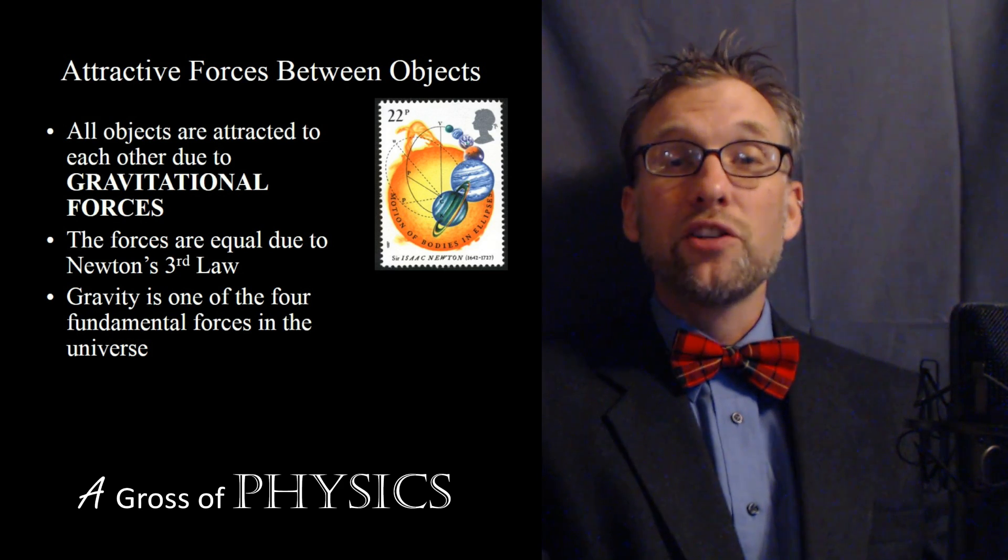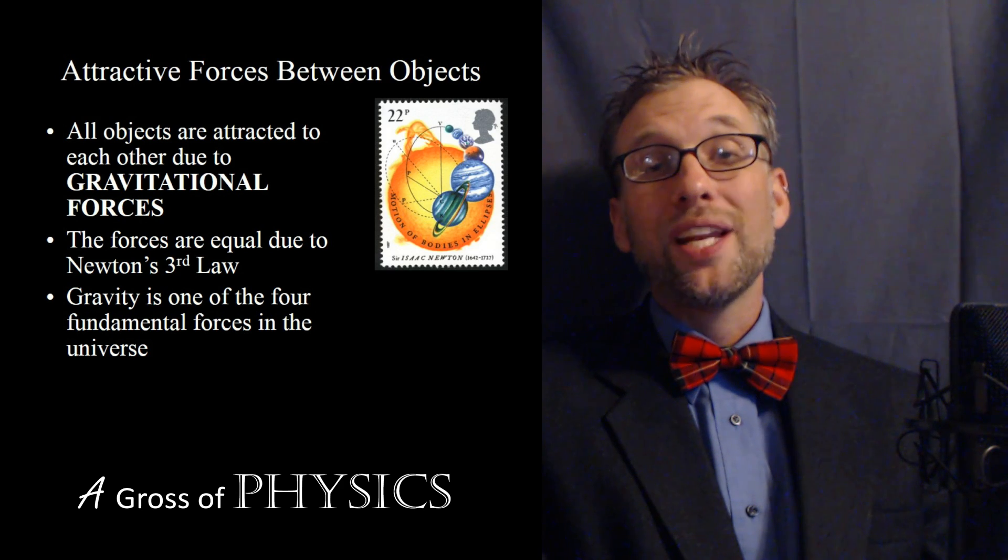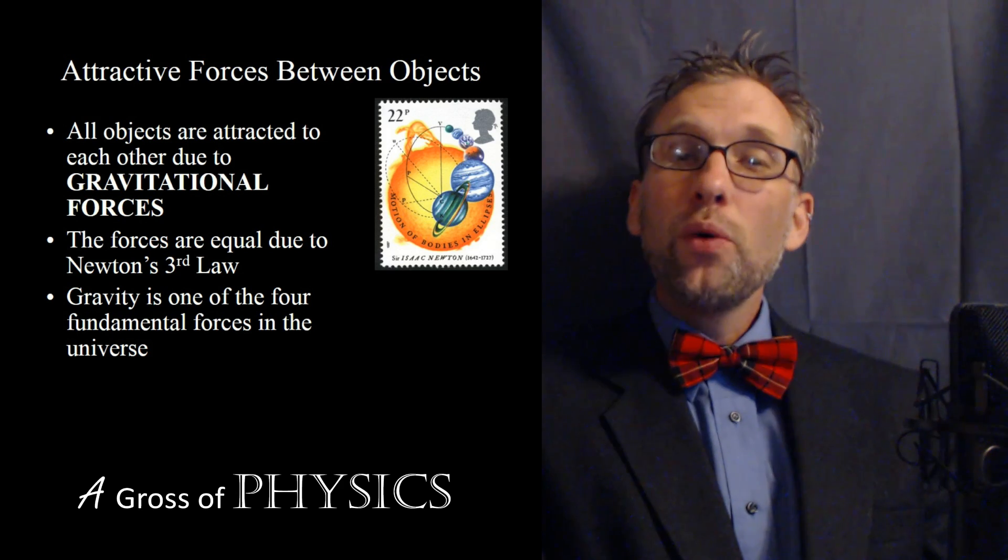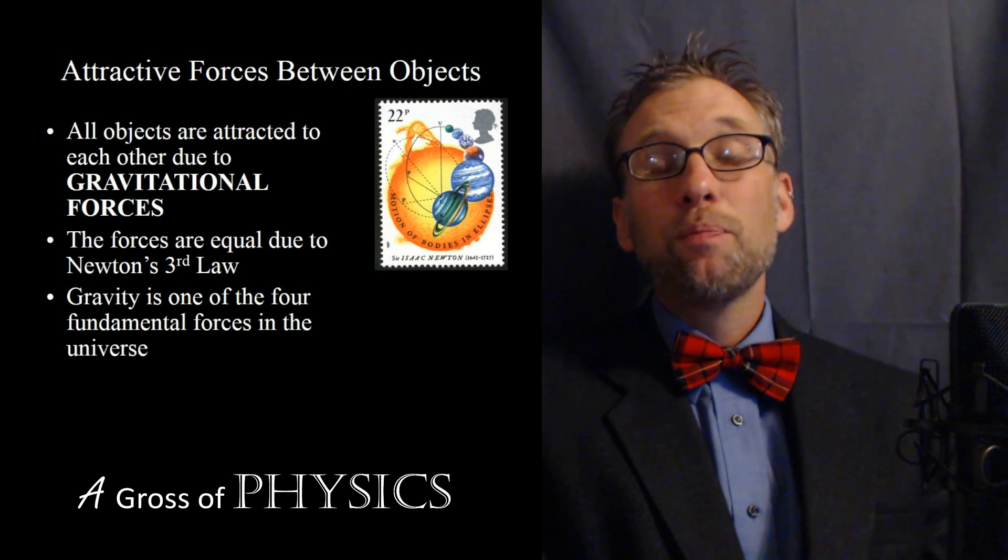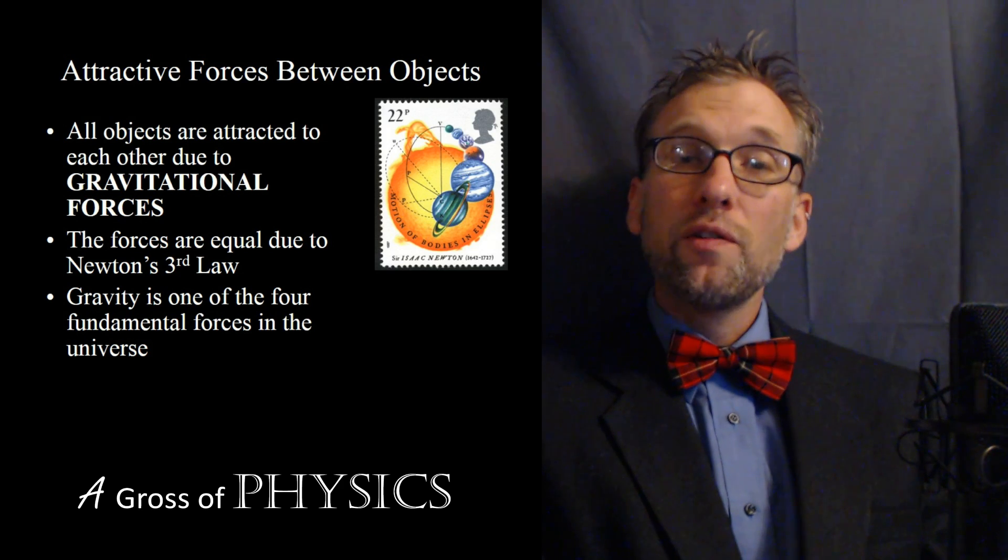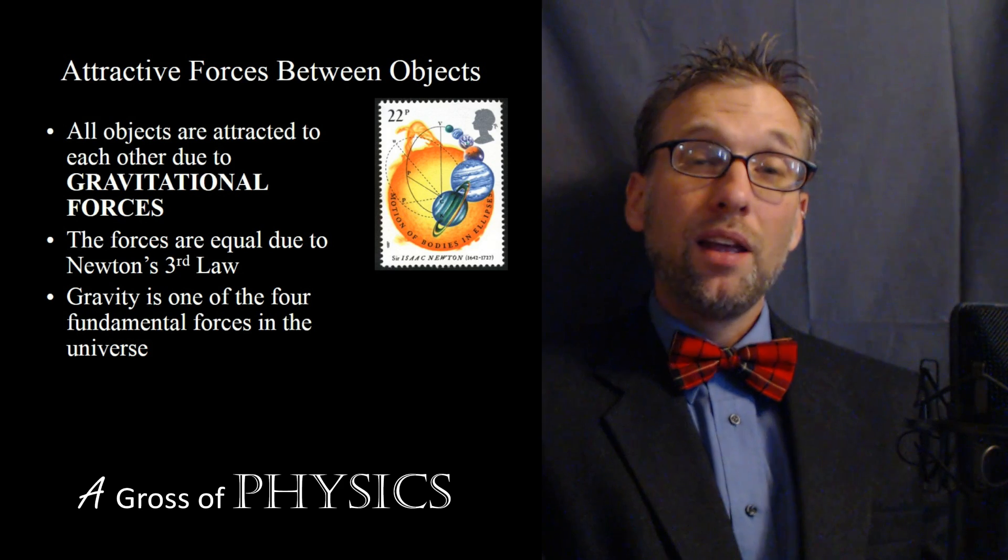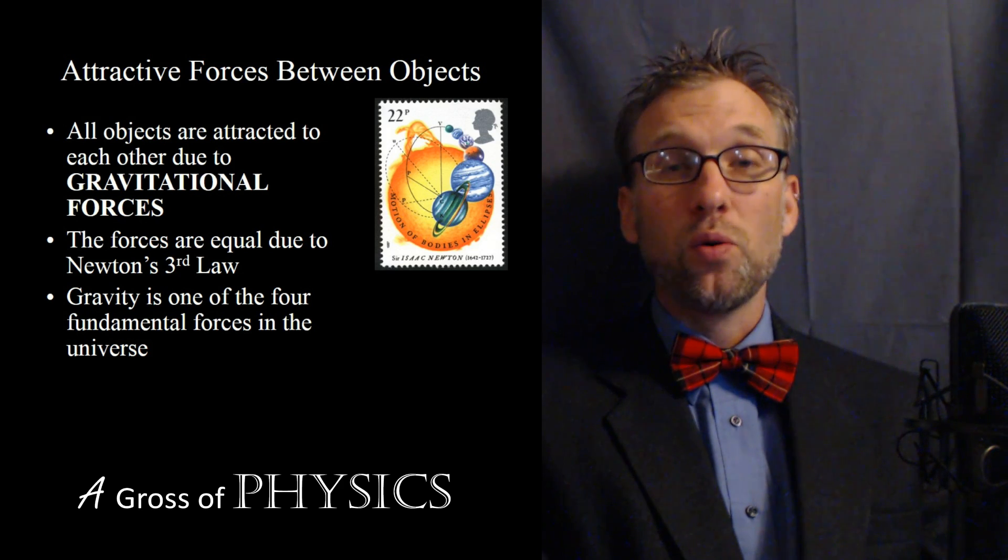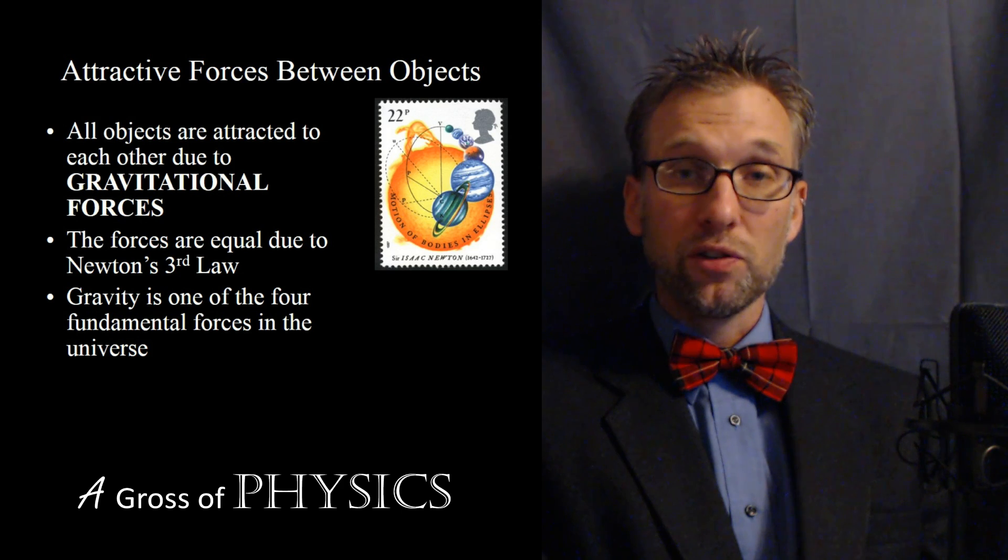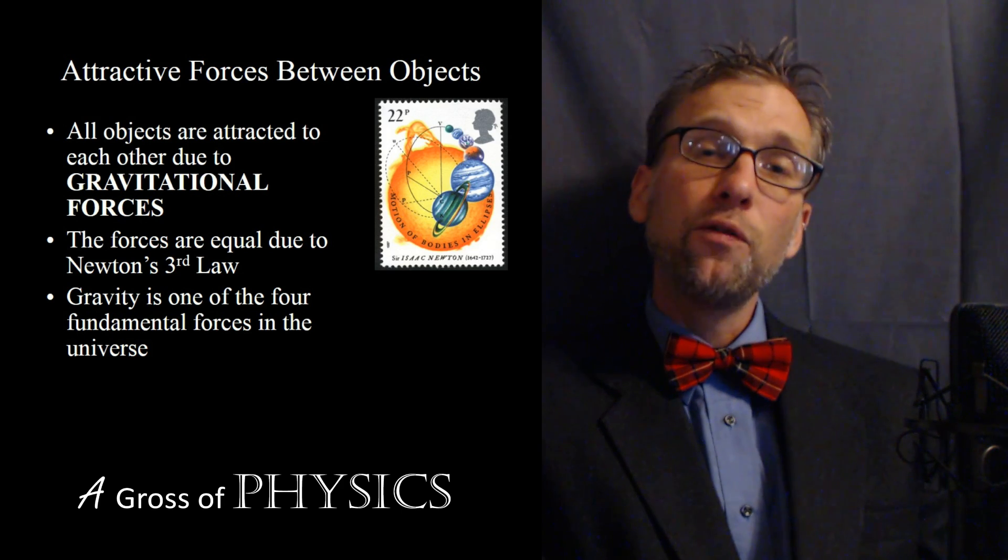Newton's Universal Law of Gravitation allows us to calculate the force between any two objects. What we actually do when we find the force of gravity on an object is simplify this equation, because certain variables are always the same. In fact, we can find g, which is 9.8 meters per second squared, using Newton's Law of Universal Gravitation.